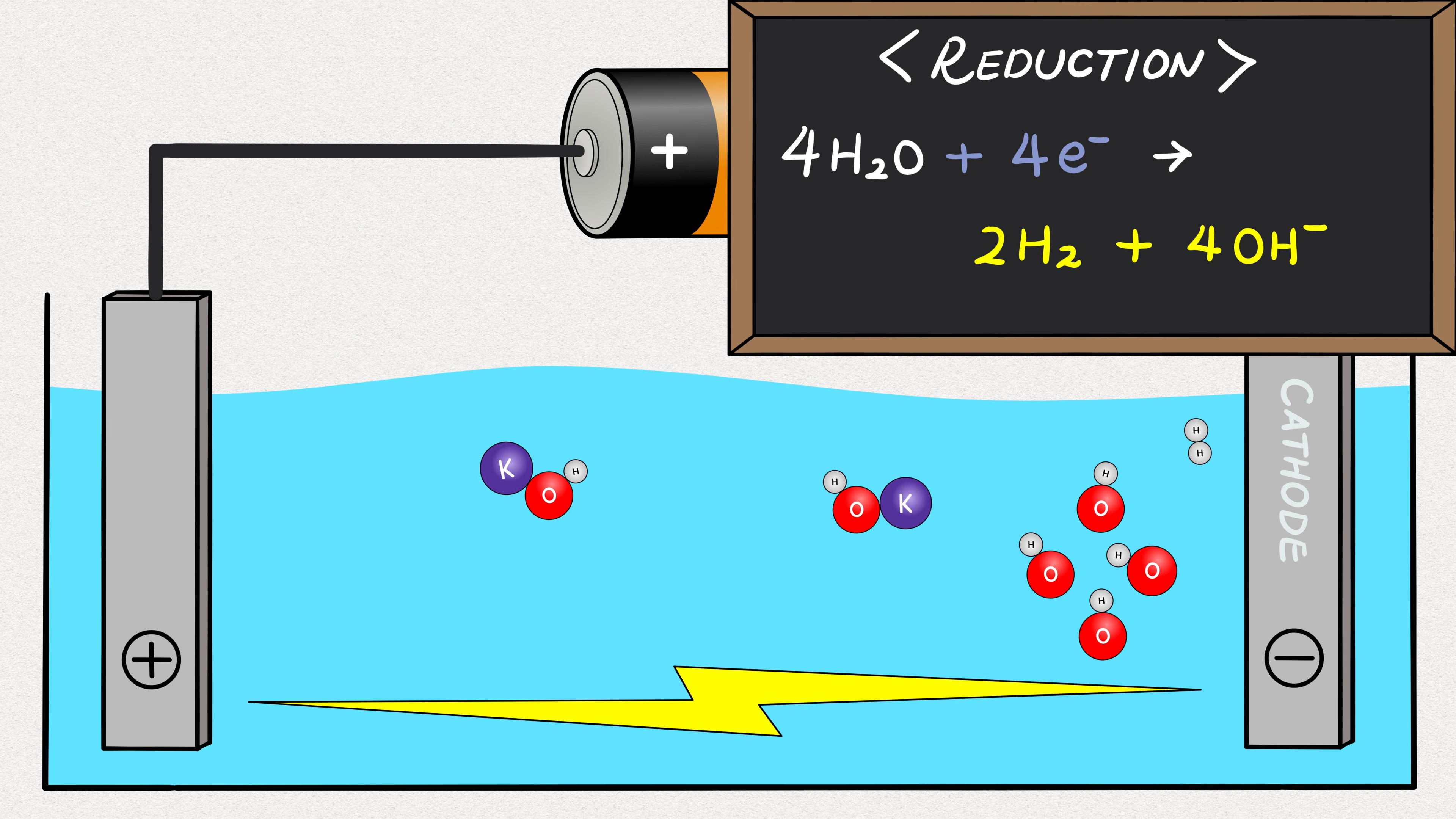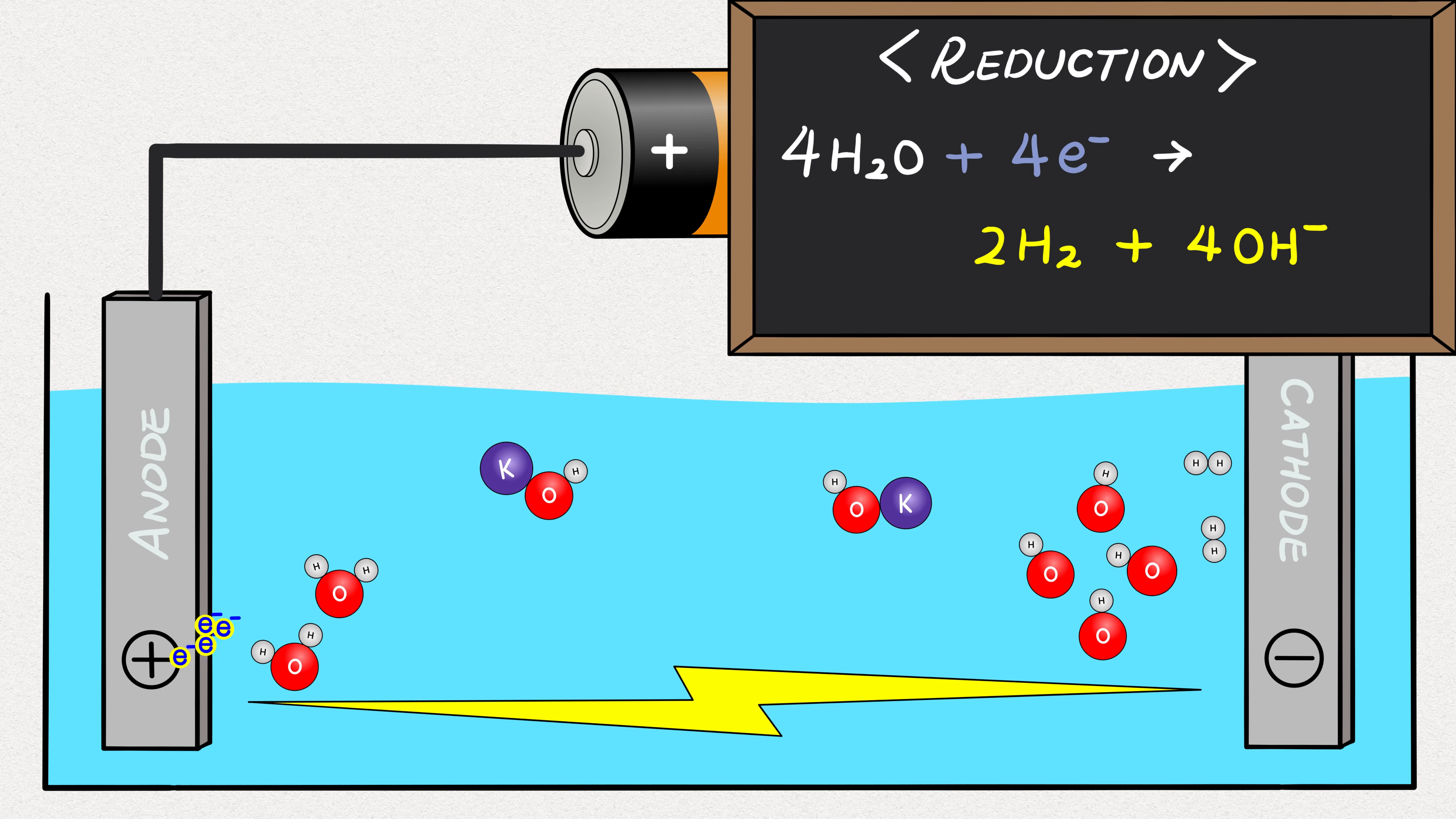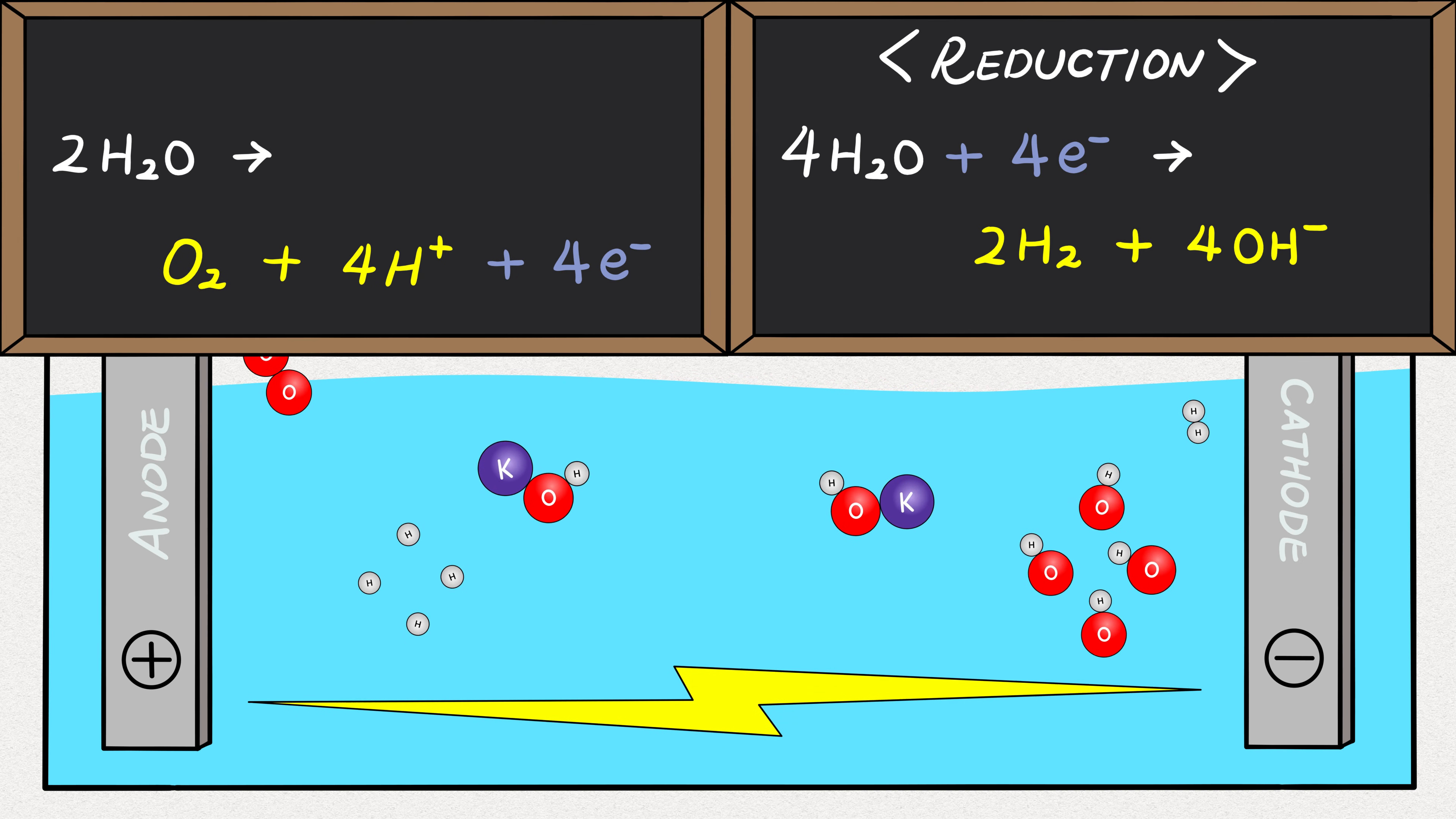On the other side of the cathode, electrons exit the water through the positive electrode, which we call the anode. When this happens, two H2O molecules will lose two electrons each, resulting in O2 plus four positively charged hydrogens. Let's move the four electrons to the other side. This reaction is called oxidation.